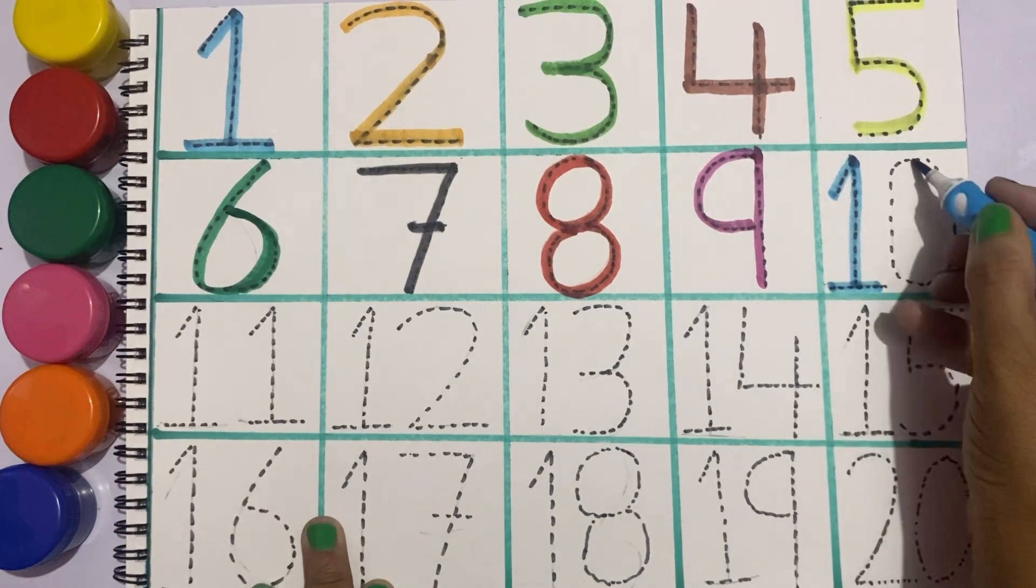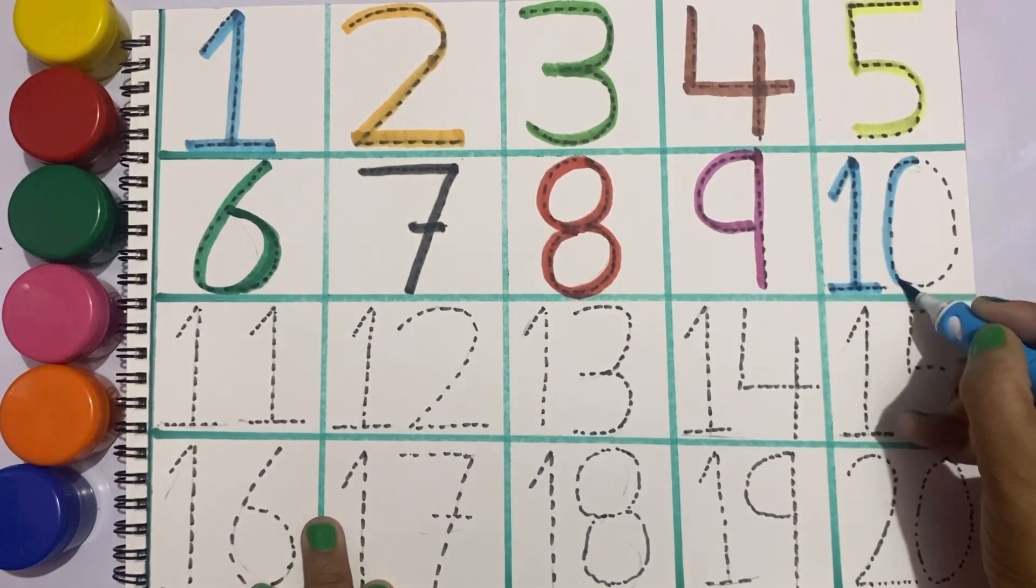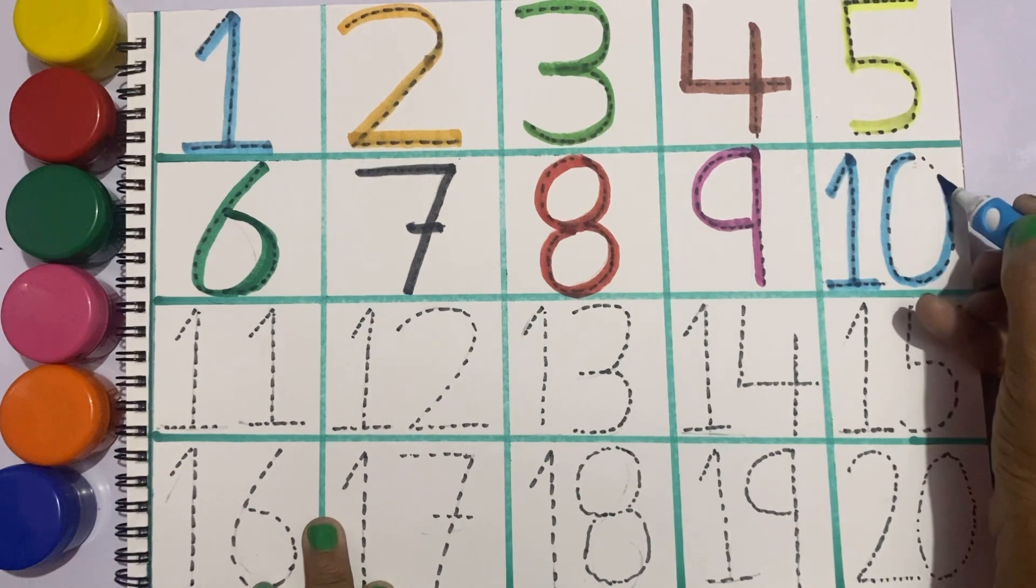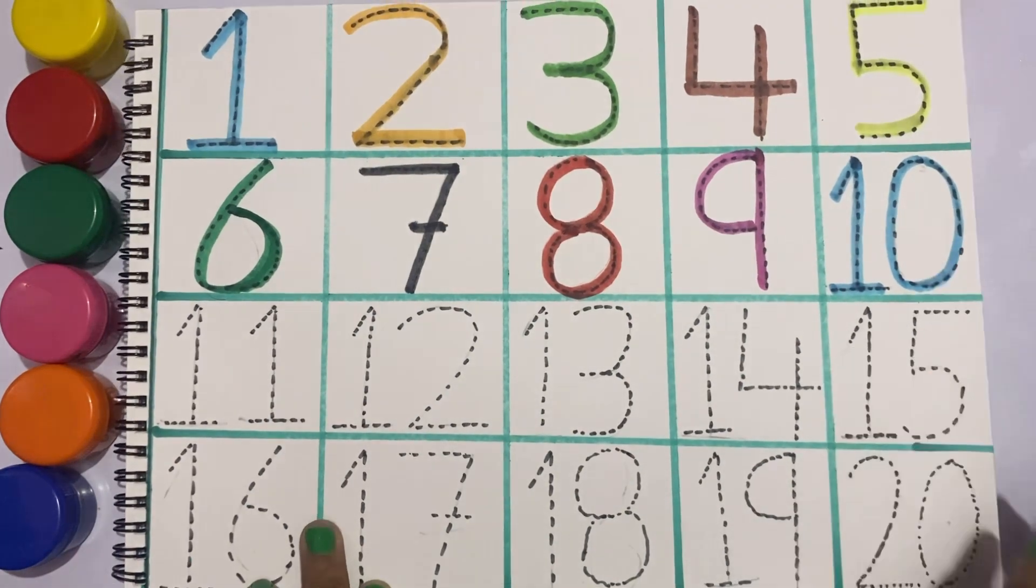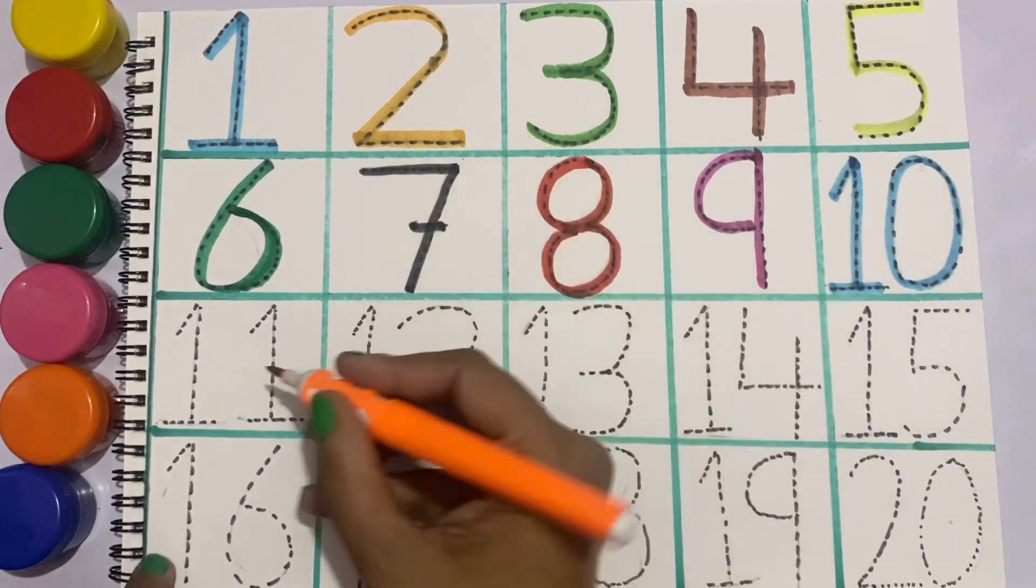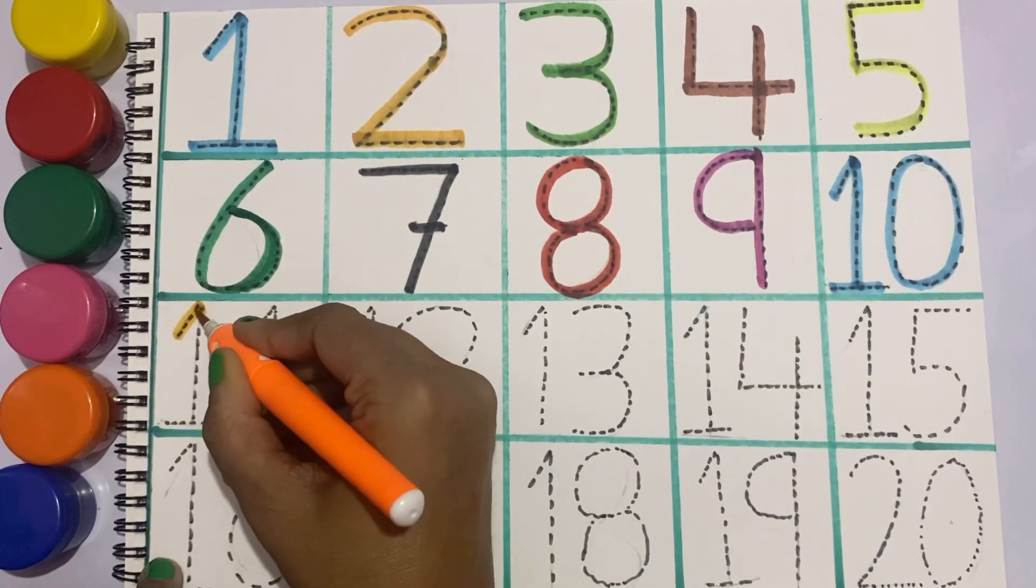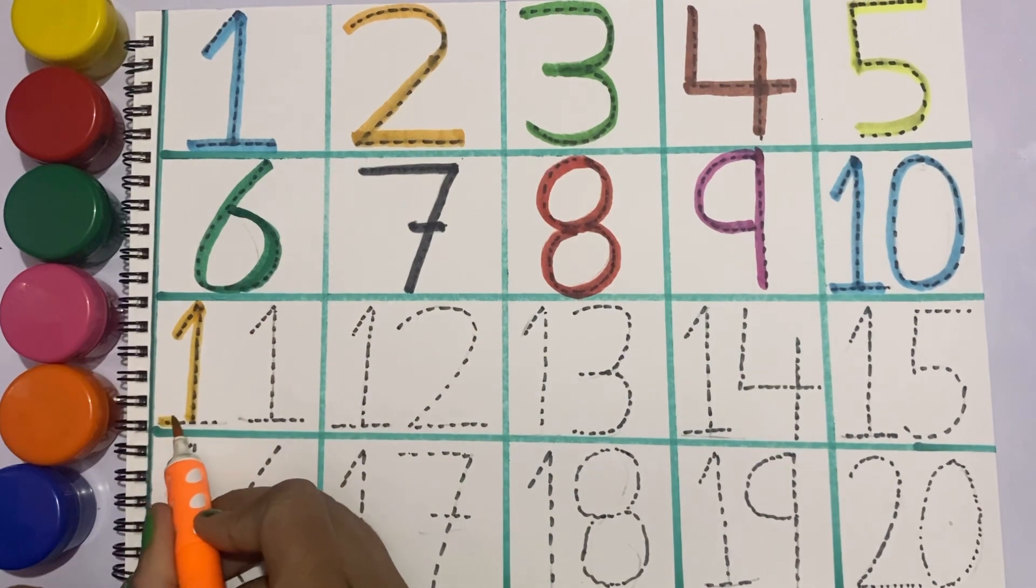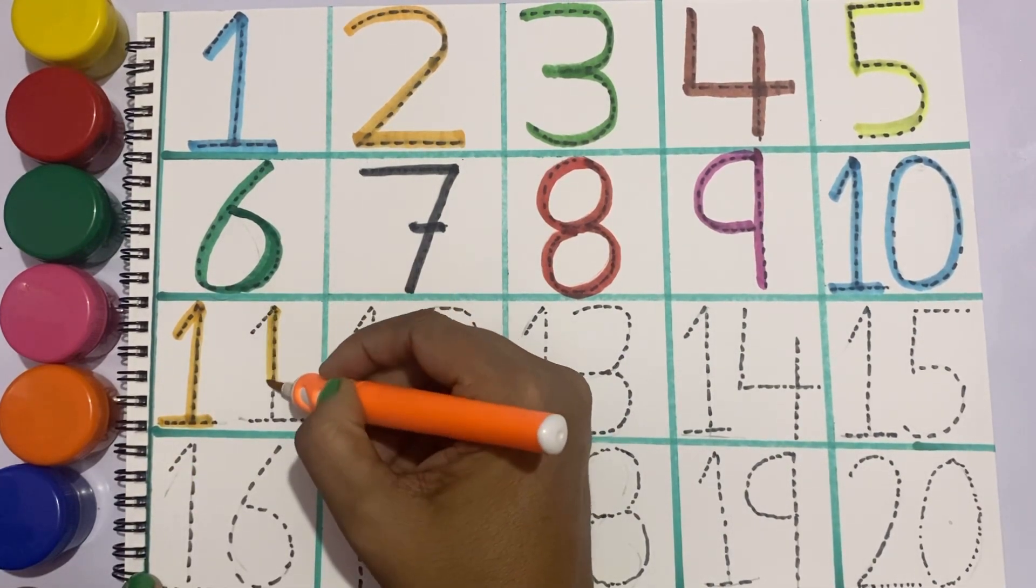One then zero. Ten. Now we'll write eleven with the help of orange color, one and one.